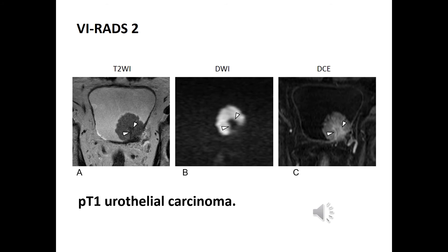Arrowheads on the left posterior side of the bladder are rated as T2W Category 2. The diffusion-weighted image shows a C-shaped area of high signal intensity with a low signal intensity stalk connecting to the left side of the bladder wall, rated as DW Category 2. The T1-weighted axial DCE image shows the tumor at the left posterior wall with uninterrupted submucosal enhancement, also rated as DCE Category 2. The final VRATS score is 2, consistent with a pT1 urothelial carcinoma.